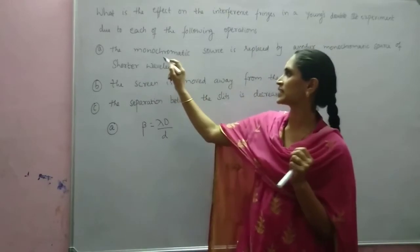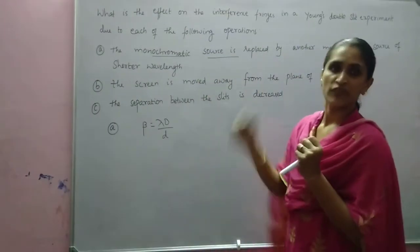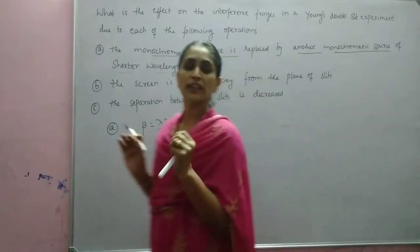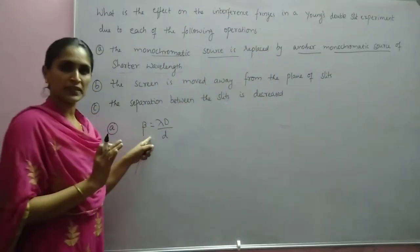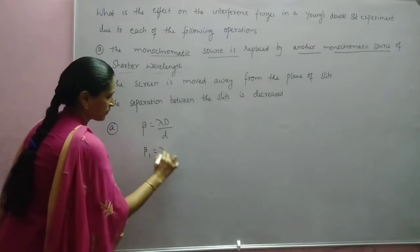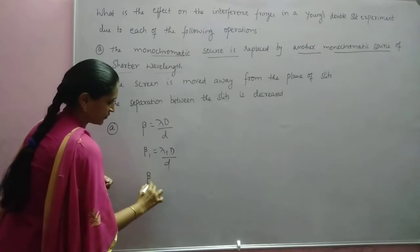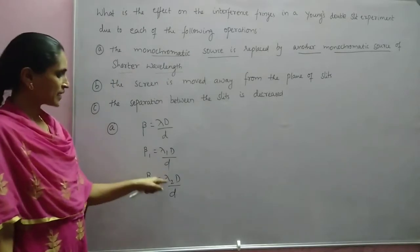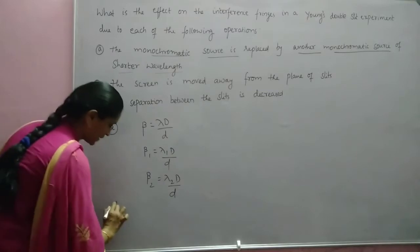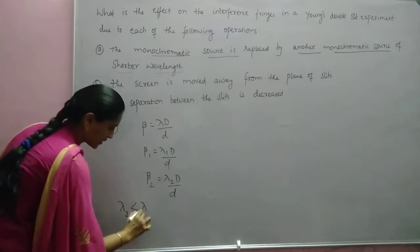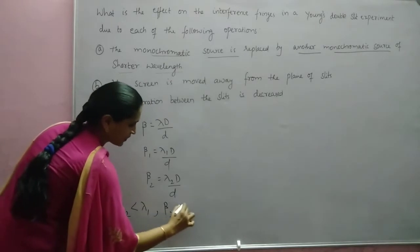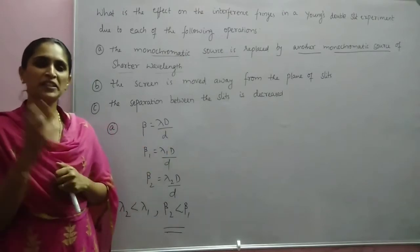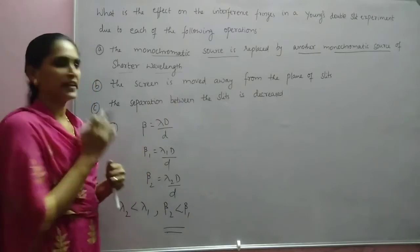For the first case, the monochromatic source — that is, wavelength — is replaced by another monochromatic source of shorter wavelength. So in the first case, fringe width beta1 equals lambda1·D/d, and in the second case beta2 equals lambda2·D/d. Since lambda2 is less than lambda1, fringe width will decrease. Beta2 will be less than beta1. Fringe width is directly proportional to wavelength, so if we replace it with a shorter wavelength, fringe width decreases.